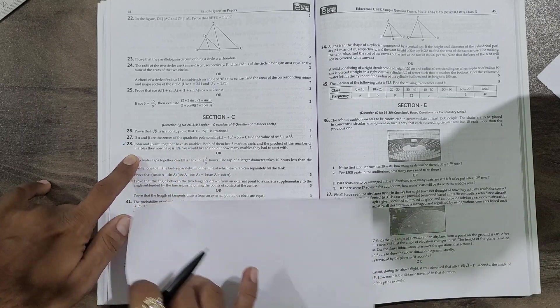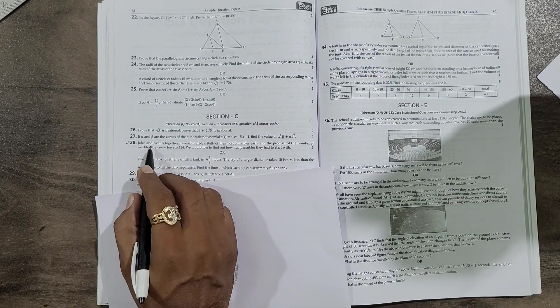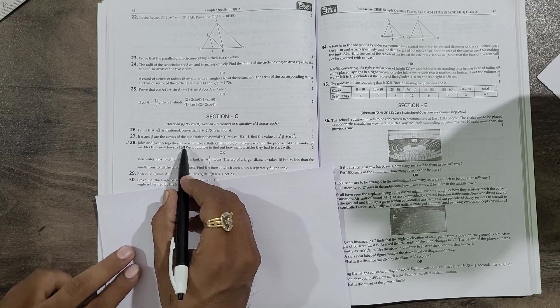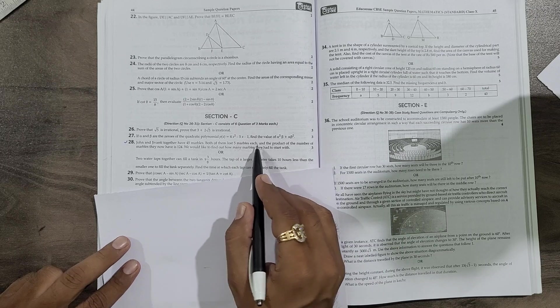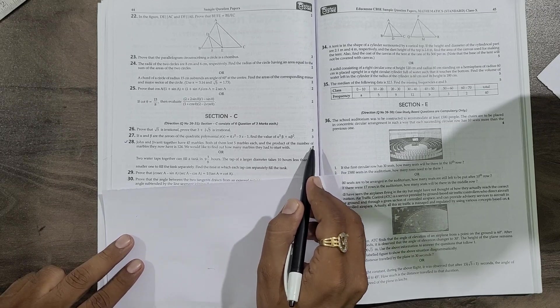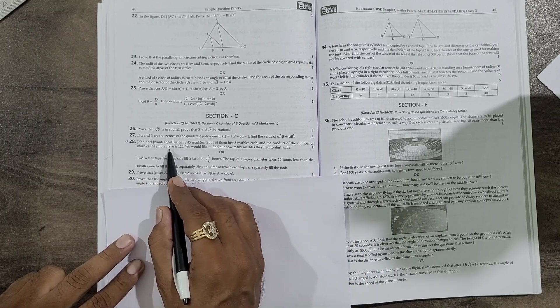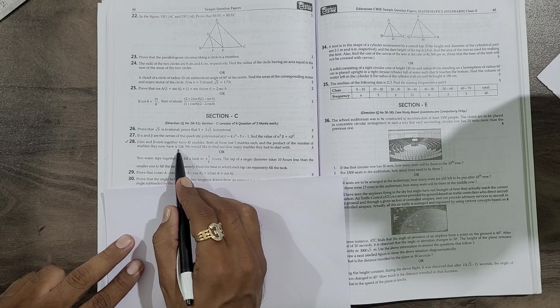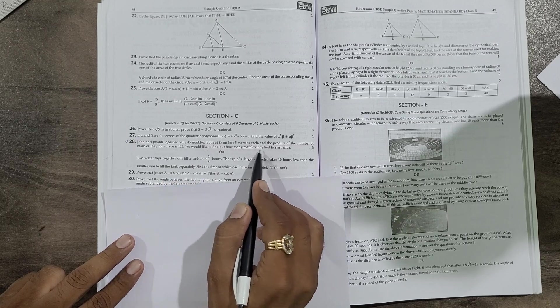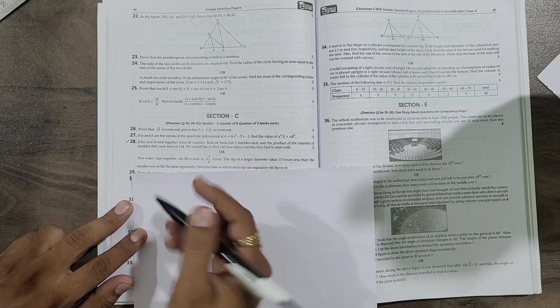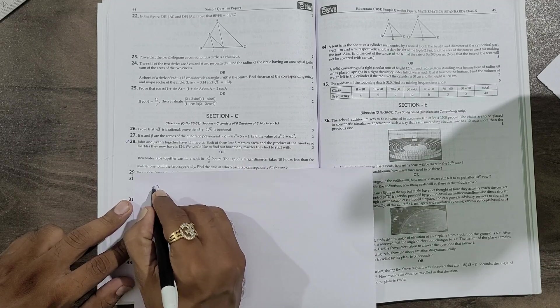John and Jivanti together have 45 marbles. Both of them lost 5 marbles each, and the product of the number of marbles they now have is 124. We would like to find out how many marbles they had started with.